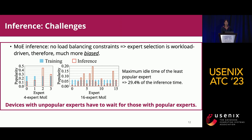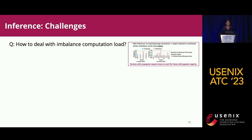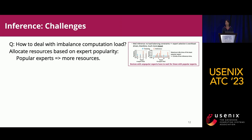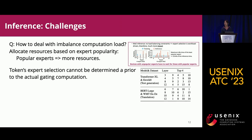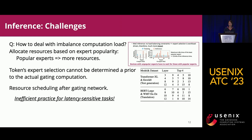Moving on to inference: MOE inference has a more biased expert popularity distribution, so the question is how to deal with imbalanced device load. Our idea is to allocate more resources to popular experts and pack unpopular ones. However, popular experts in each layer vary, and expert selection of each token cannot be determined before the gating network computation finishes. Conducting resource scheduling after the gating network is not efficient as it increases large overhead to change resource allocation while model computation is fully stopped.